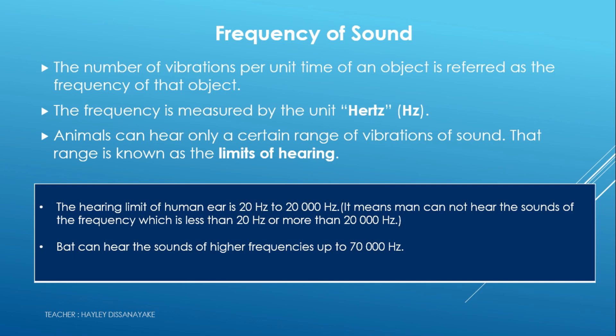The ears of different animals are sensitive to different ranges of frequencies. This range is known as the limit of hearing. The hearing limit of the human ear is 20 hertz to 20,000 hertz, meaning humans cannot hear sounds with a frequency less than 20 hertz or more than 20,000 hertz. Bats can hear sounds of higher frequencies, up to 70,000 hertz.